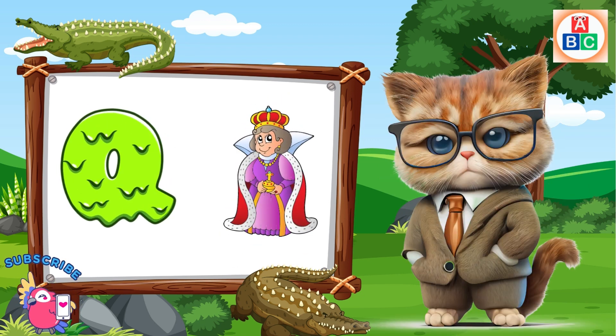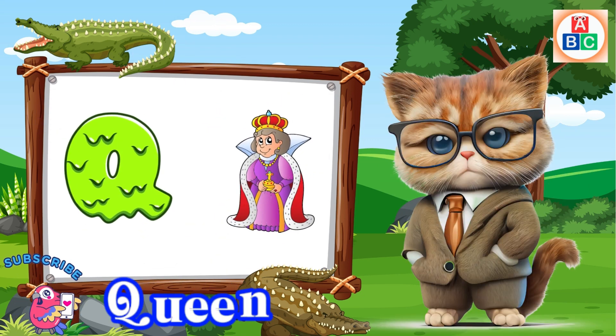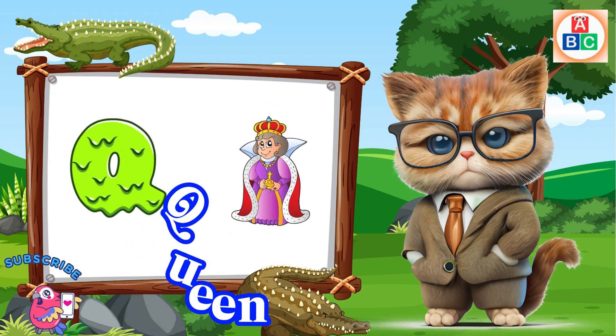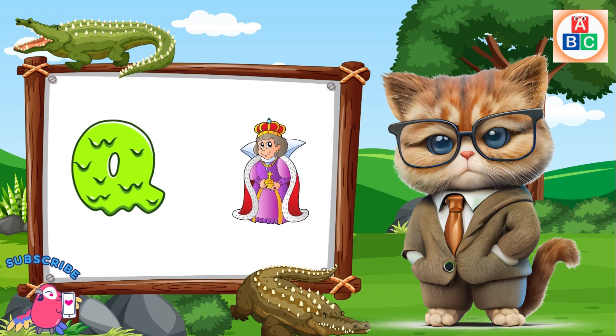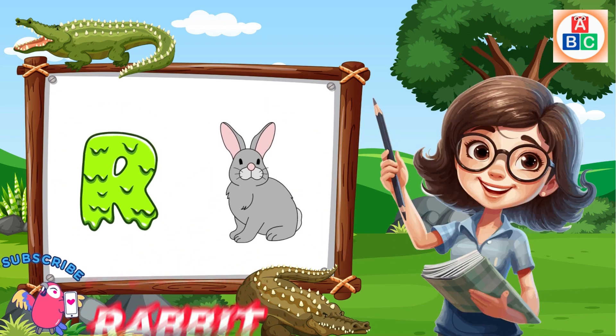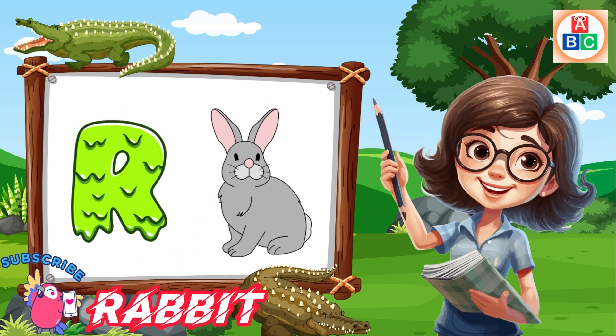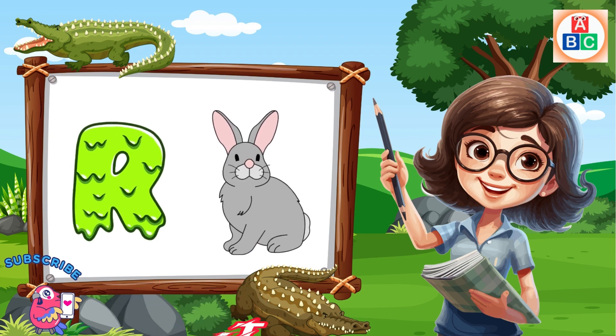Q is for queen, qu-qu-queen. R is for rabbit, r-r-rabbit.